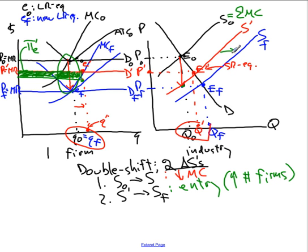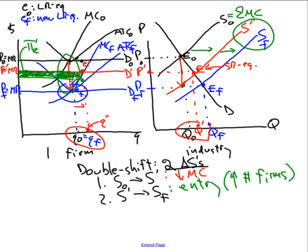Entry — the increase in the number of firms in response to the short-run economic profit — is what gives us the shift from S-prime to SF. So there are two shifts of the supply curve: the first shift, SO to S-prime, is the result of the fall in marginal cost, and takes us to E-prime where the typical firm is making a profit. Because the typical firm is making a profit, there's a second shift, which is due to entry. That second shift takes the price down to PF. At PF the firm is at the bottom of its new average total cost curve, ATCF, at EF. We are back in long-run equilibrium: zero economic profit, no more reason for entry, and output is back — QF equals QO. That's the double shift.